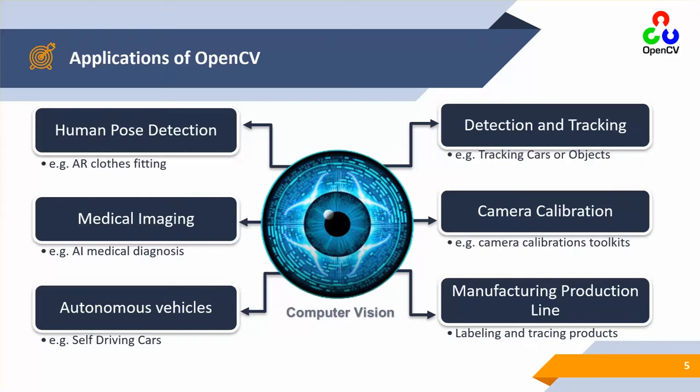Medical imaging is one of the most important fields related to image processing and computer vision. Concepts of image processing and computer vision are used to perform applications in medical imaging such as brain MRI and CT scan analysis — for example, identification of brain tumors, both malignant and benign, as well as chest X-rays and ultrasound.